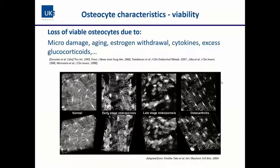An important aspect is osteocyte viability. As a post-mitotic cell type, viability becomes critical. Early work from Dr. Tate and colleagues demonstrates what can happen with osteoporosis and osteoarthritis, where the osteocyte network is disturbed and osteocytes start to die off. Several hormones such as estrogen withdrawal, cytokines, and micro-damage can stress the osteocyte and cause loss of viable cells — and viability is really important for this cell type.